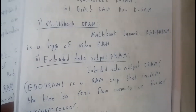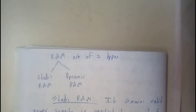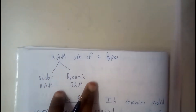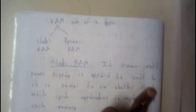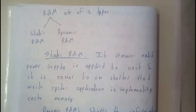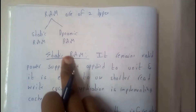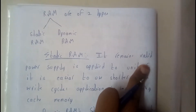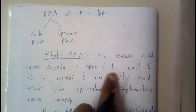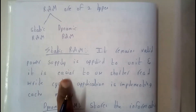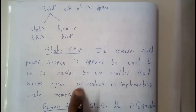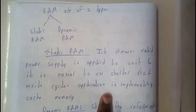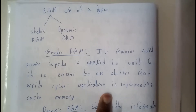RAM is of two types: Static RAM and Dynamic RAM. Static RAM remains valid as long as the power supply is applied to the unit. It has easier read-write cycles and is mainly implemented on cache memory.